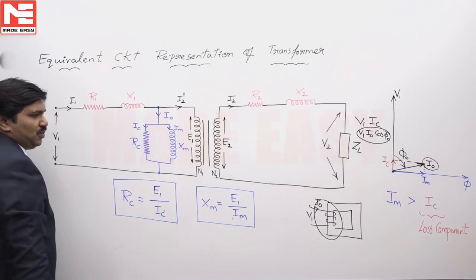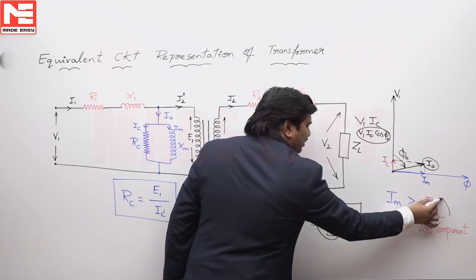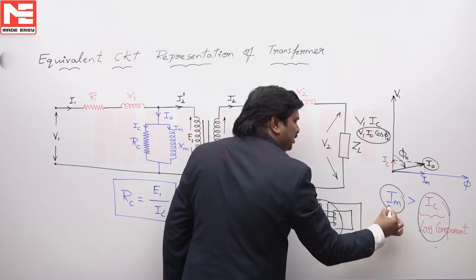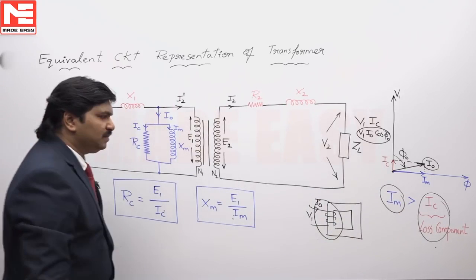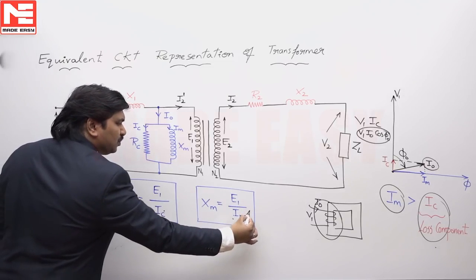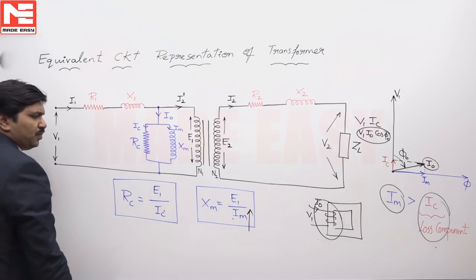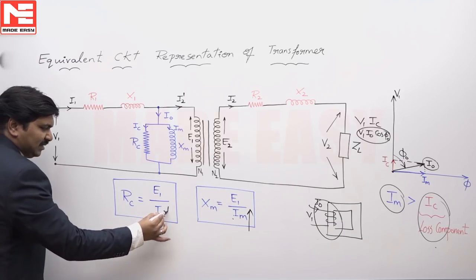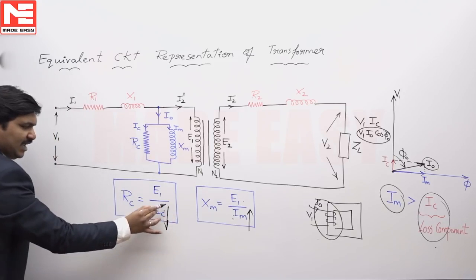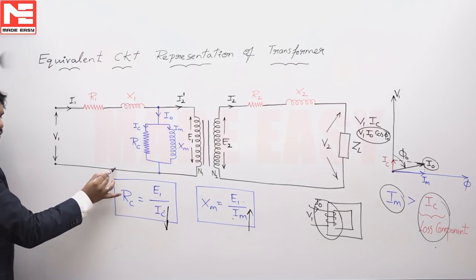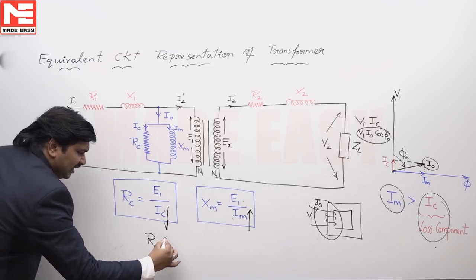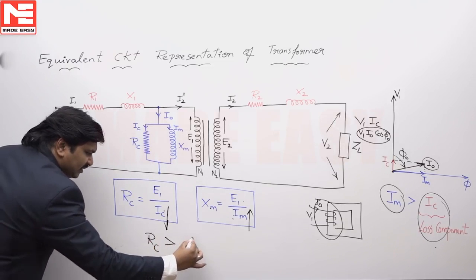On no load as the loss component is very very small, generally I_M value is bigger than I_C. When I_M is more compared to I_C, if this is more, X_M is less. If this is less, R_C is more. Therefore, the relationship is R_C is always greater than X_M.